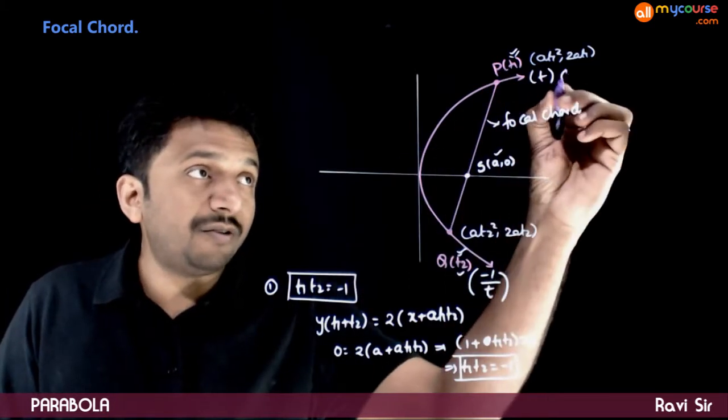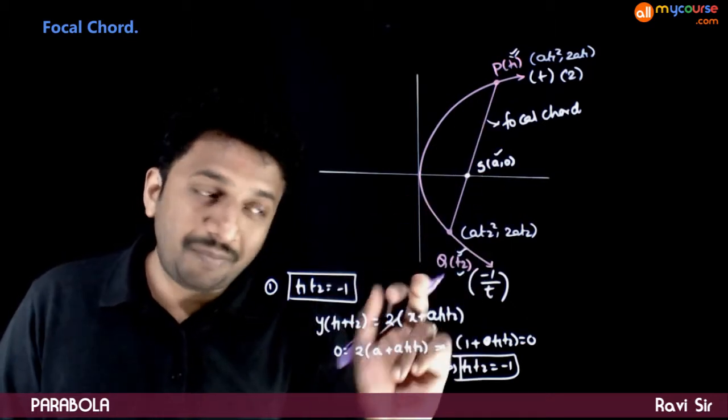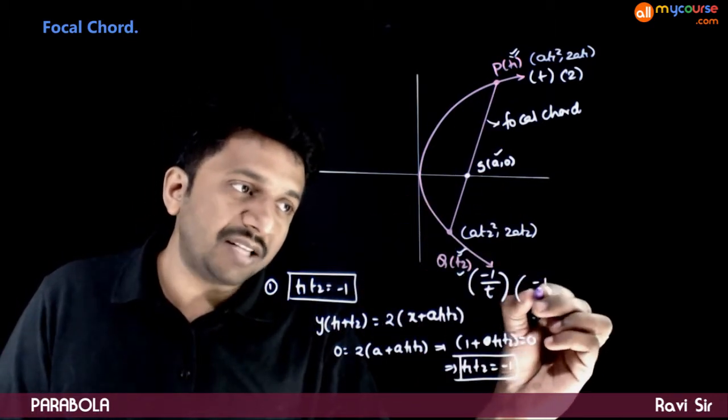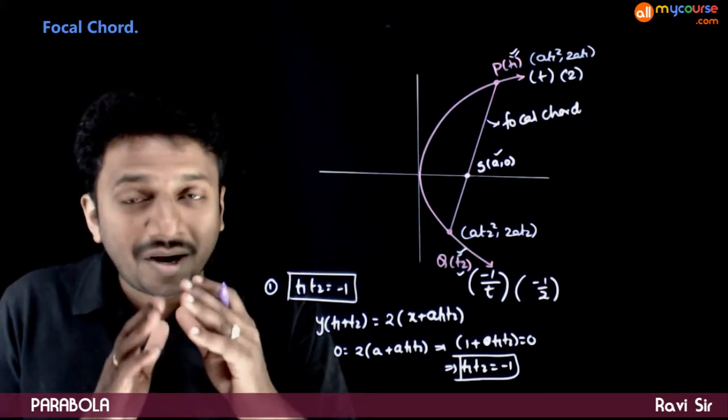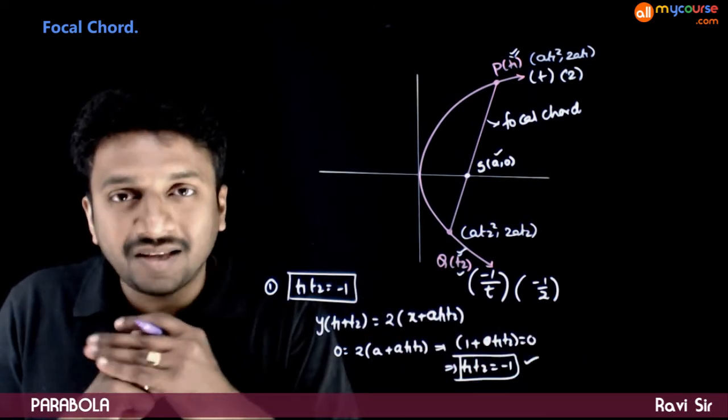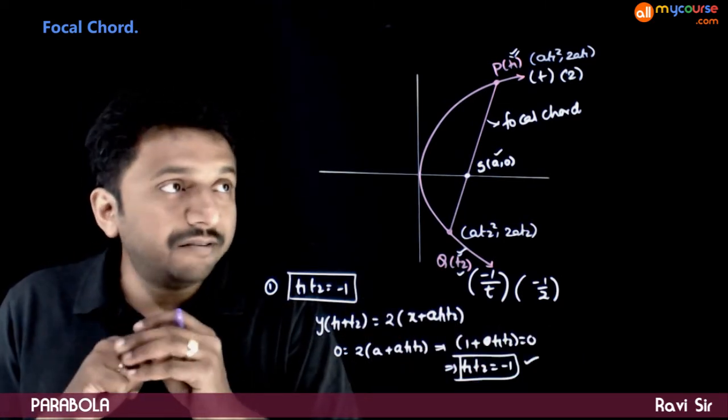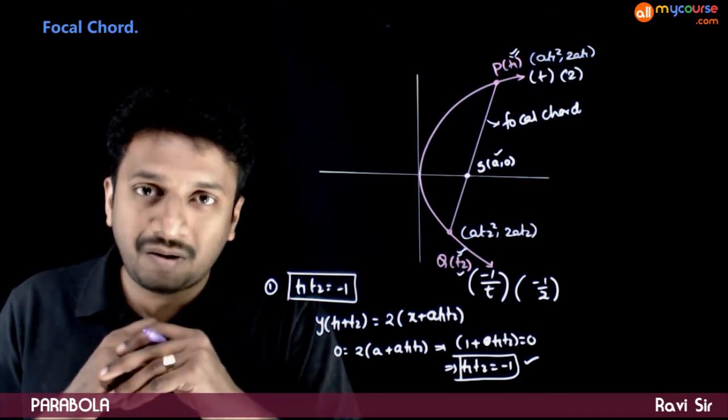For example, if the parameter of point P is 2 and if it is a focal chord, the parameter of point Q has to be equal to minus 1 by t. So, I hope you understand the meaning of t1 t2 is equal to minus 1. Now, let us look at some special properties of the focal chord.